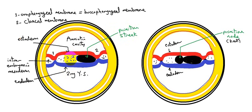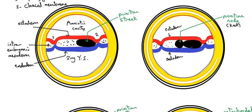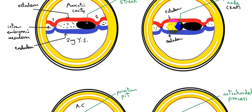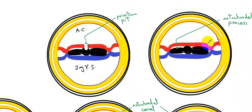On the cephalic end of the primitive streak, this is the primitive node, or Hensen's node. Cephalic to the primitive node, we will see the notochordal process appear. So we have the primitive streak, the primitive node, and the notochordal process on the cephalic end of the primitive node.